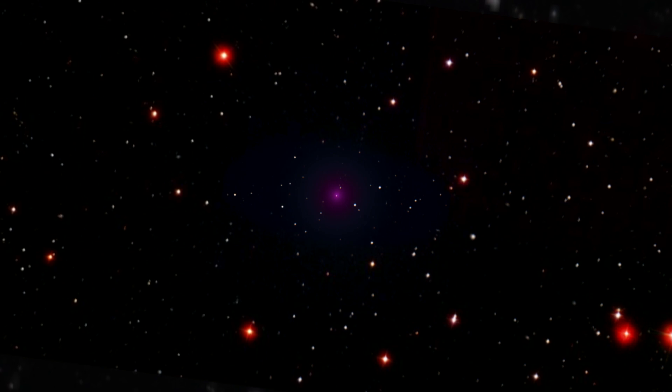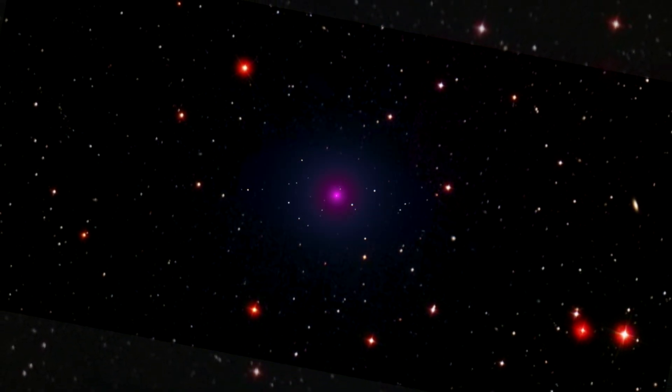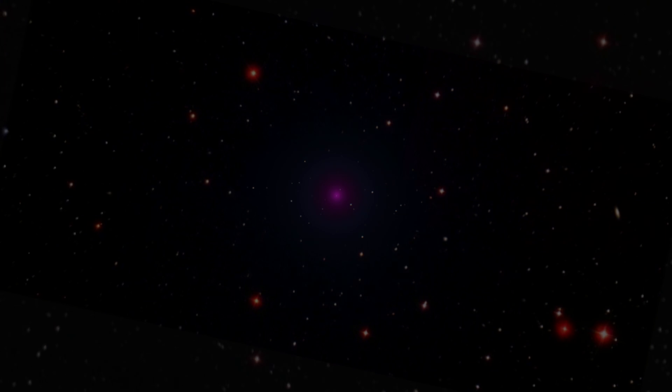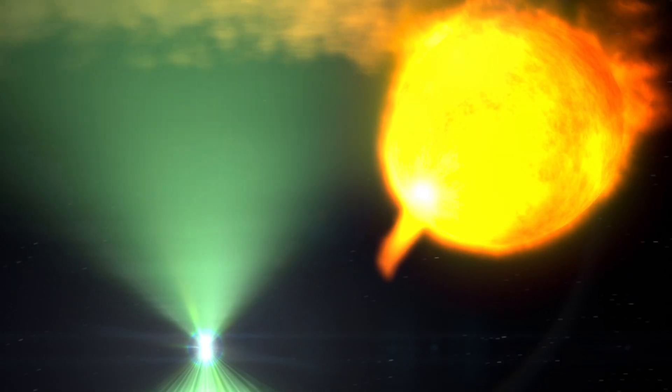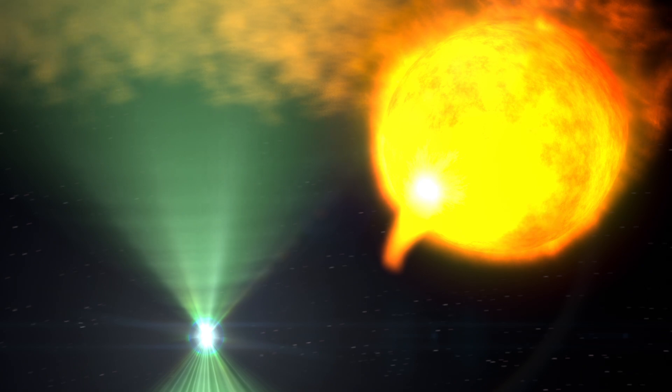Then the system lights up in X-rays and gamma rays. Here's what researchers think may be happening. The two stars orbit so closely, the gas from the Sun-like star overflows, and a stream falls toward the pulsar.